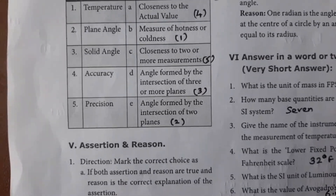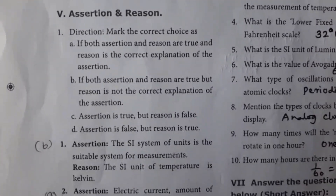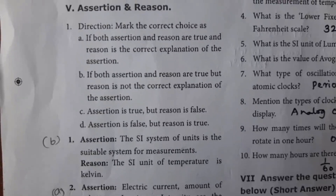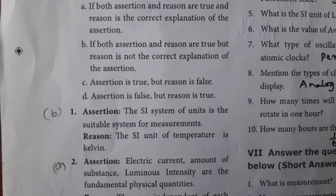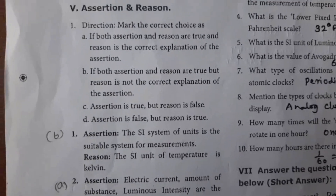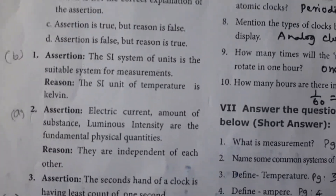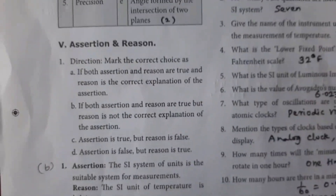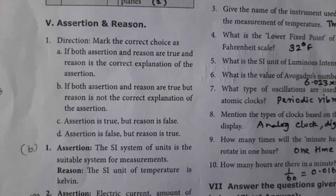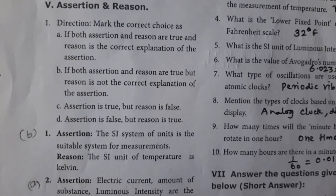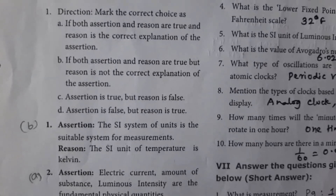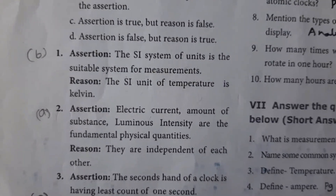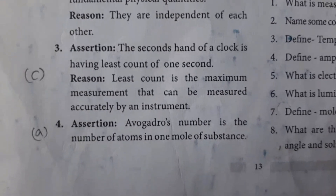Assertion and Reason questions. If both assertion and reason are true but reason is not the correct explanation, the answer will be B. Answers: 1 — B is correct; 2 — A is correct; 3 — C is correct; 4 — A is correct; 5 — D is correct.